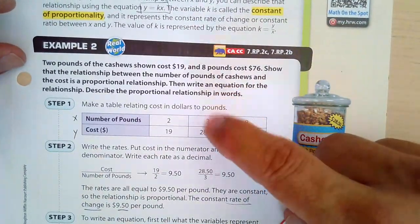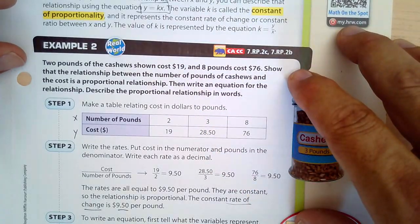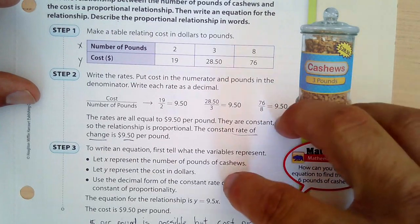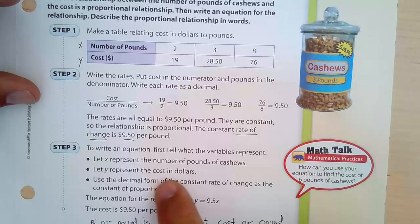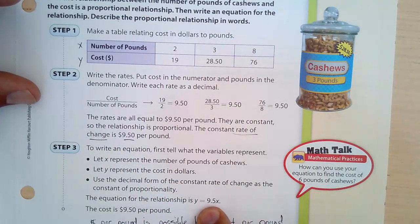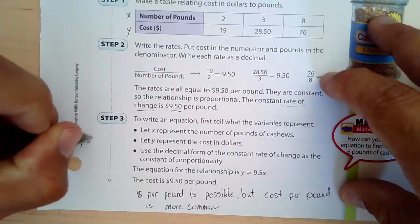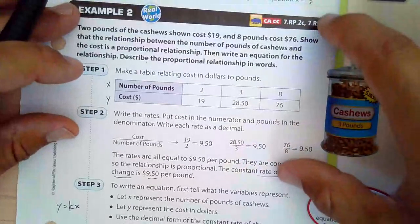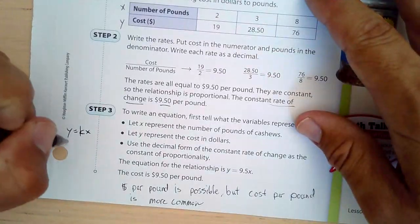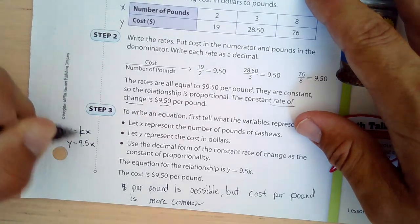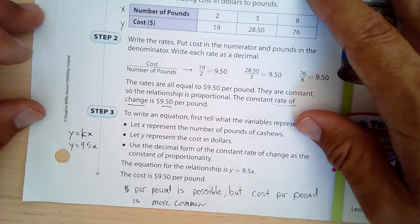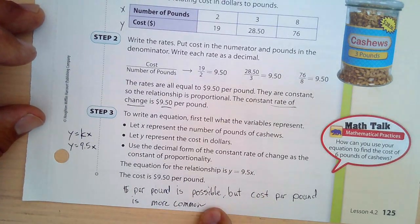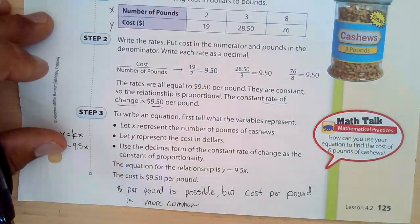And so what we do is, basically there's a lot of stuff here. X is the number of pounds of cashews. Y is the cost in dollars. And our decimal form, the rate of change is 9.5. So really you just take, if I write this here, Y equals KX. So to write the equation for this relationship over here, the equation that describes this entire relationship is Y equals 9.5X. So you just take, substitute 9.5 for K. And dollars per pound, that's possible. Yeah, we can definitely use that. But usually cost per pound is more common in these types of problems.